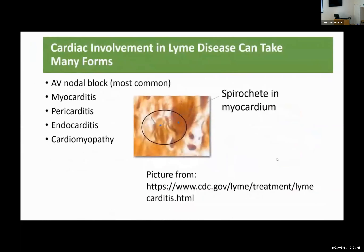Cardiac involvement in Lyme disease can take many forms: AV nodal block, most commonly seen; myocarditis; pericarditis; endocarditis; cardiomyopathy. This photo shows the spirochete embedded in myocardium, and this picture is from the CDC.